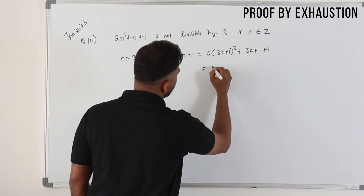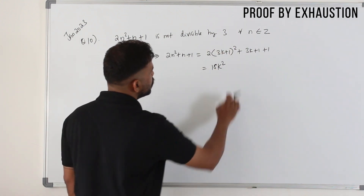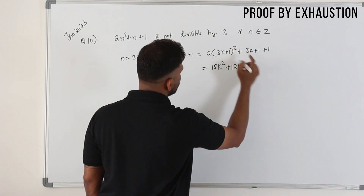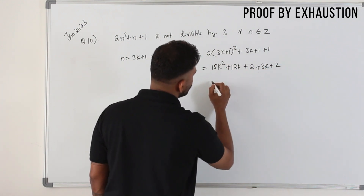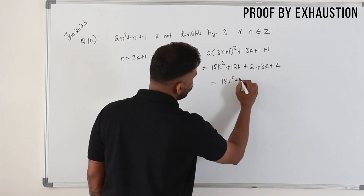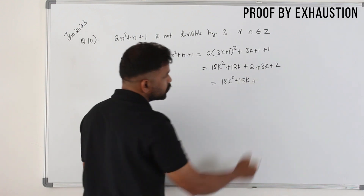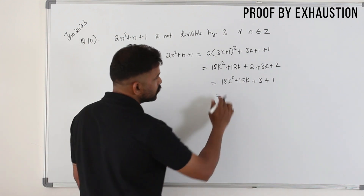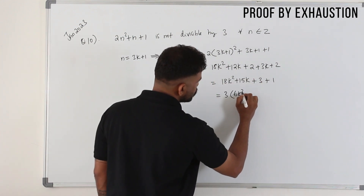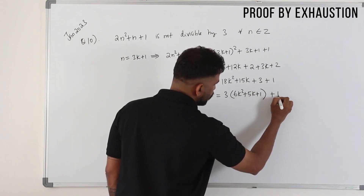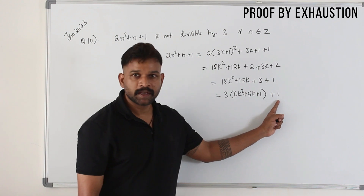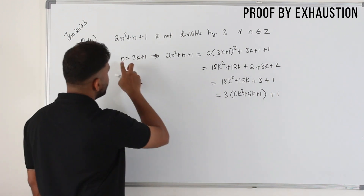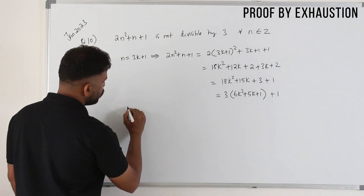When n = 3k + 1: 2n² + n + 1 = 2(3k + 1)² + (3k + 1) + 1. Expanding: 2(9k² + 6k + 1) + 3k + 2 = 18k² + 12k + 2 + 3k + 2 = 18k² + 15k + 4. Writing 4 as 3 + 1, you get 3(6k² + 5k + 1) + 1. Since this is 3 times something plus 1, it is not divisible by 3. Therefore, 2n² + n + 1 is not divisible by 3 when n = 3k + 1.